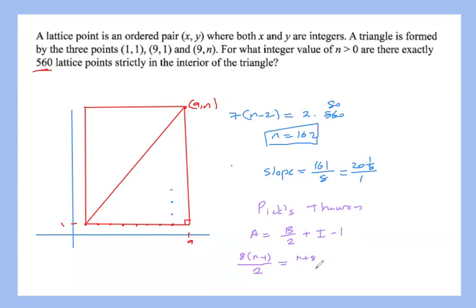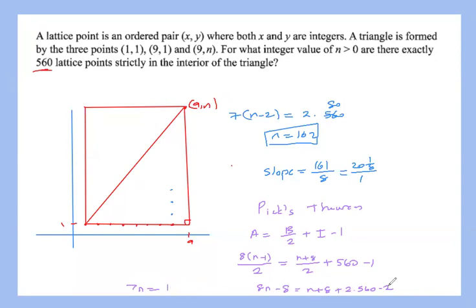Applying Pick's theorem and multiplying through by 2: 8(n−1) = (n+8) + 2(560) − 2. Expanding: 8n − 8 = n + 8 + 1120 − 2. Subtracting n from both sides gives 7n, then simplifying: 7n = 14 + 1120 = 1134, so n = 1134/7 = 162. This confirms the answer of n = 162 using Pick's theorem as well.